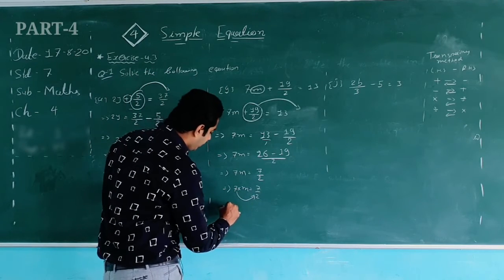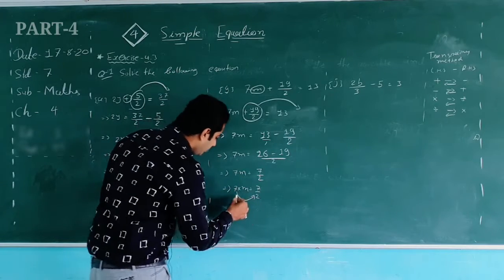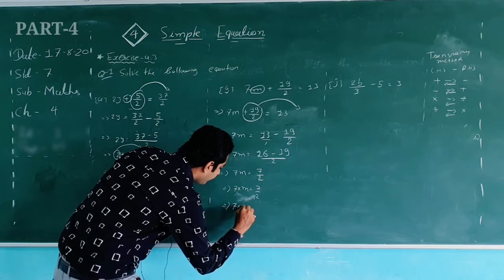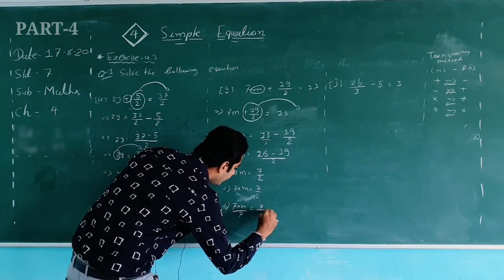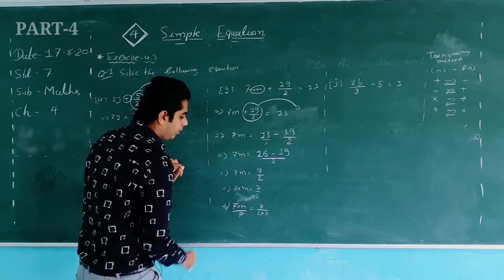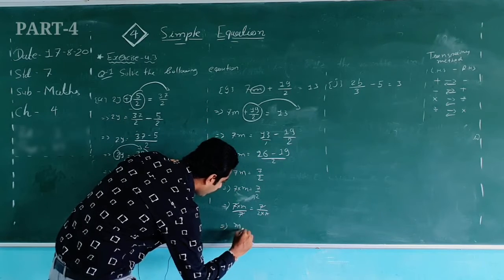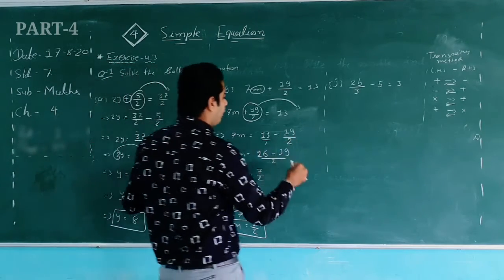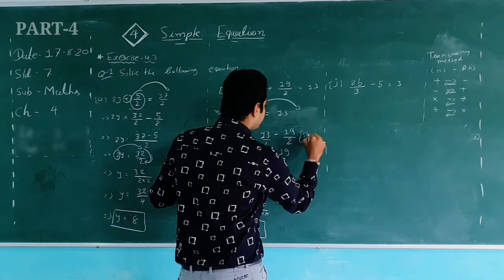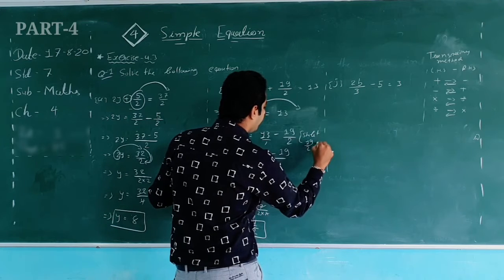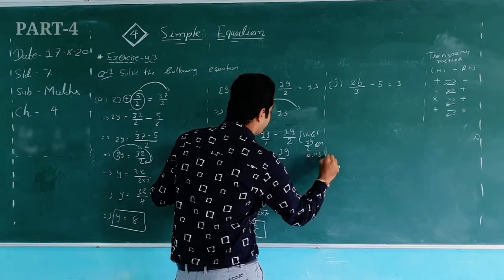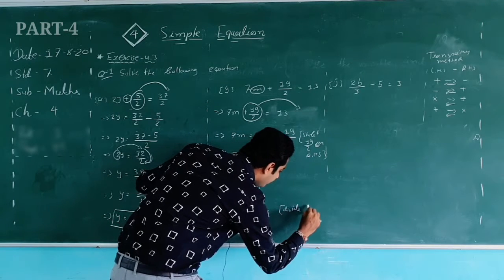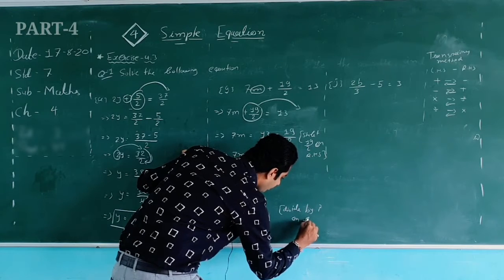Now 7 is in multiplication with M. Using the transposing method, I shift 7 to the right side where it goes into the denominator. Or using the separation of variable method, I divide both sides by 7: (7 × M) / 7 = (7/2) / 7. The 7s cancel out on both sides.